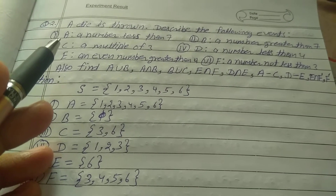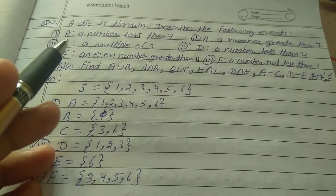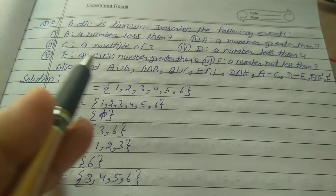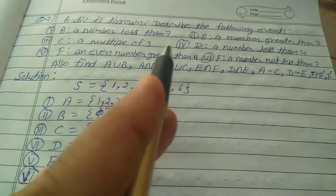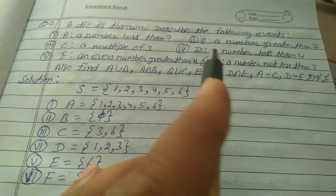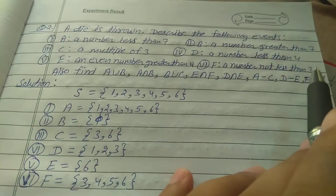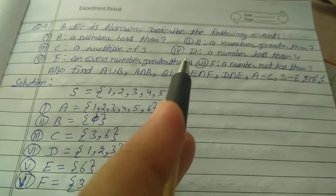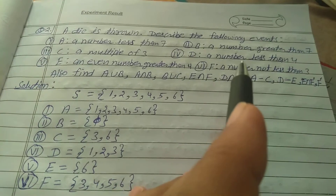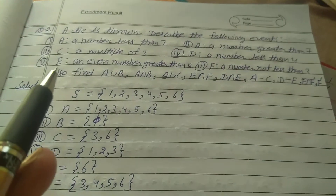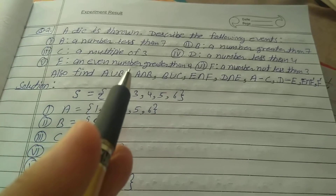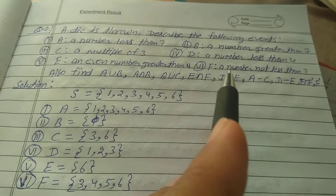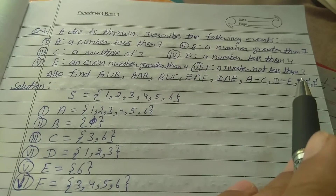Explain question number 2, exercise 16.2, class 11th. A die is thrown. Describe the following events: A - a number less than 7; B - a number greater than 7; C - a multiple of 3; D - a number less than 4; E - an even number greater than 4; F - a number not less than 3.